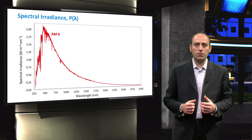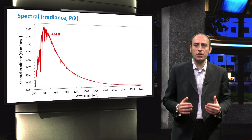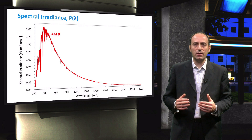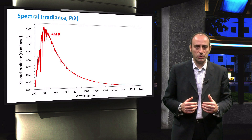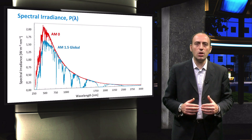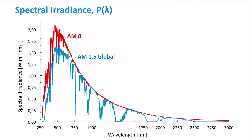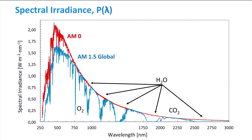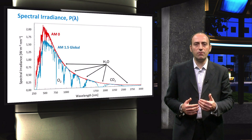Just outside the atmosphere of the Earth, the spectrum keeps its regular shape. This is what we call AM0, depicted in red, because no atmosphere is traversed. When we let sunlight travel through the atmosphere, the spectrum of the global irradiance received on a flat horizontal surface shows several dips due to scattering and absorption by air molecules and dust particles. The dips related to absorption in molecular oxygen, water molecules, and carbon dioxide are indicated here. All these molecules contribute to absorption of solar radiation at wavelengths above 1000 nm.